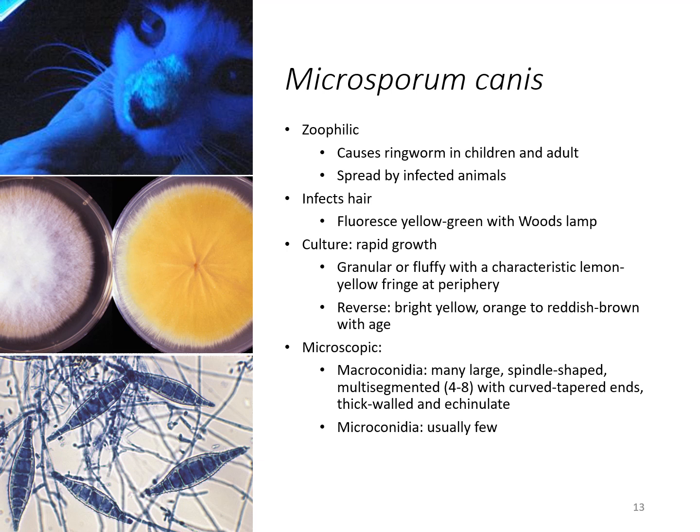Microsporium canis is passed from animal to human. It causes ringworm in children and adults and is spread by infected pets particularly. The pets can be screened as the cause, and you can see on the animal where it fluoresces with the Woods lamp. On humans, if you were to use the Woods lamp on the hair growing on the scalp, you would see that fluorescence there as well.